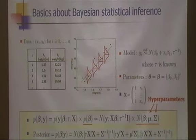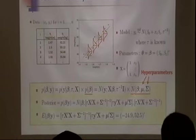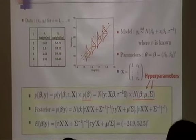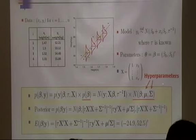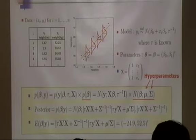Bayesian statistical inference starts with the joint probability density of parameters and data, which is the likelihood times the prior distribution. The likelihood comes from the normal linear regression model, and we assign a normal prior distribution for beta with mean mu and variance sigma. We call these hyperparameters — the parameters of the probability distribution of parameters. Once we have the joint density, we can compute the posterior density of beta given y.